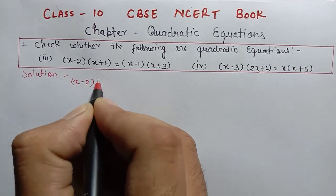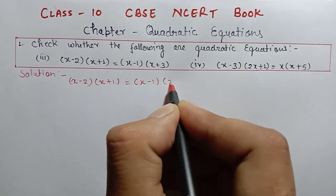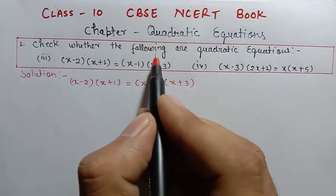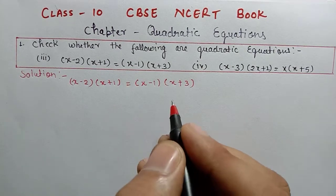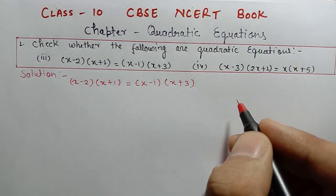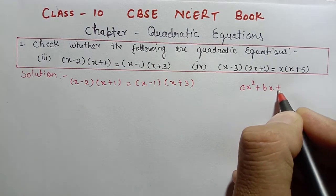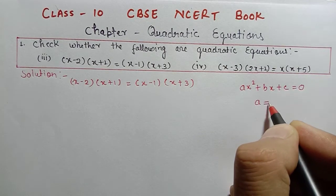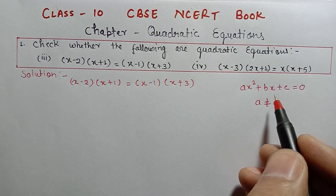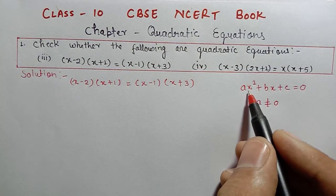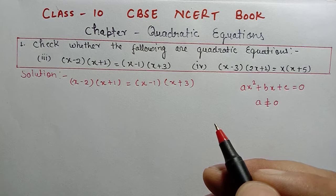The equation is: (x - 2)(x + 1) = (x - 1)(x + 3). The question asks: check whether the following are quadratic equations. We need to solve this and check if it is a quadratic equation. The general form of a quadratic equation is ax² + bx + c = 0, where a cannot equal zero. If the coefficient of x² is not zero, then it is a quadratic equation.